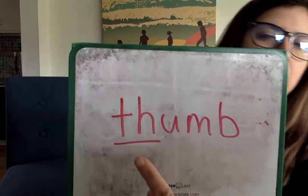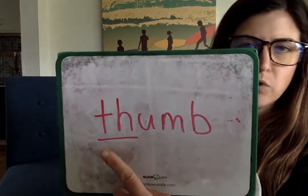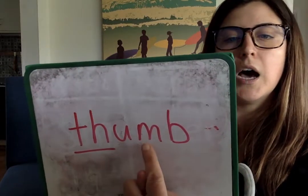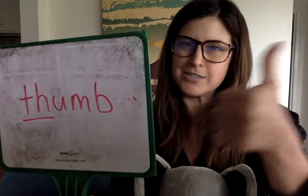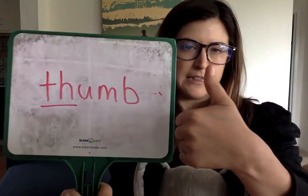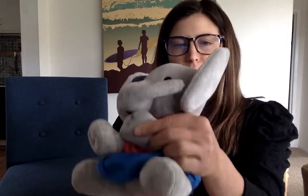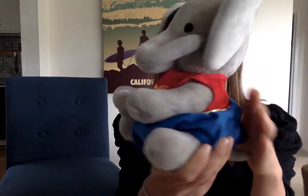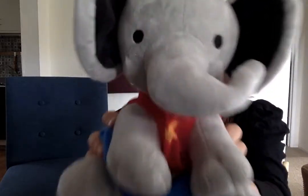We have two more body parts. This one has a very funny spelling — I'll underline the digraph. What does T and H say? See if you can remember. It says thumb. I don't know why that silent B is there. Mabel doesn't really have a thumb but we can imagine it's here. You put your thumb in, you put your thumb out, you put your thumb in and you shake it all about. You do the hokey pokey and you turn yourself around. That's what it's all about.